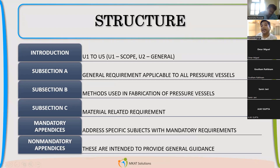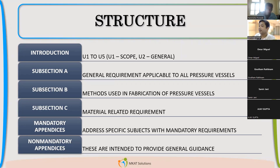Apart from that, there are mandatory and non-mandatory appendices. Mandatory appendices cover mandatory requirements that are not covered in subsections A, B, and C. A good example is mandatory appendix 2, which covers flange design — that is a mandatory appendix.